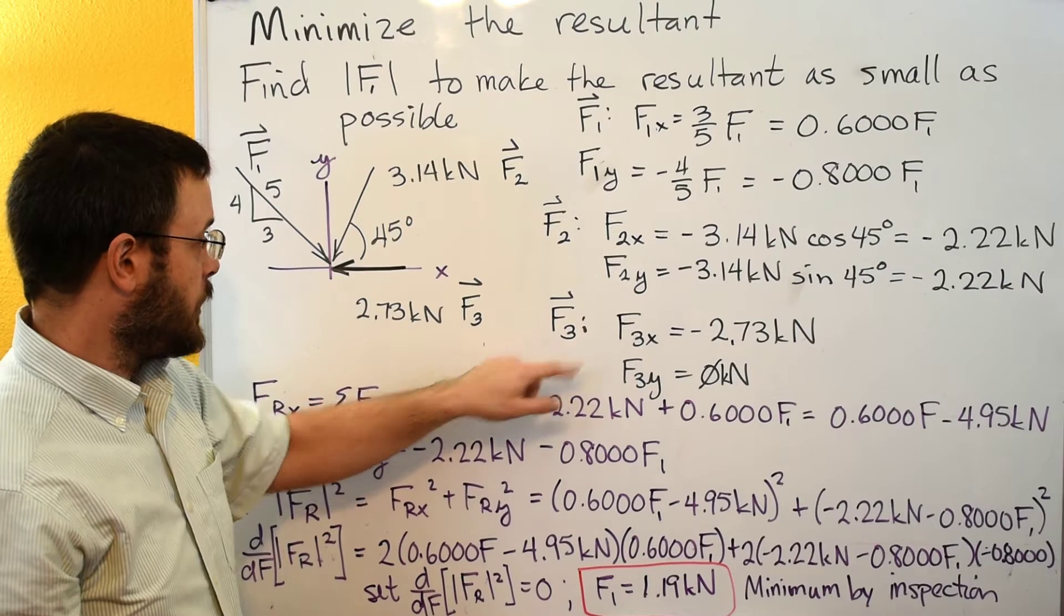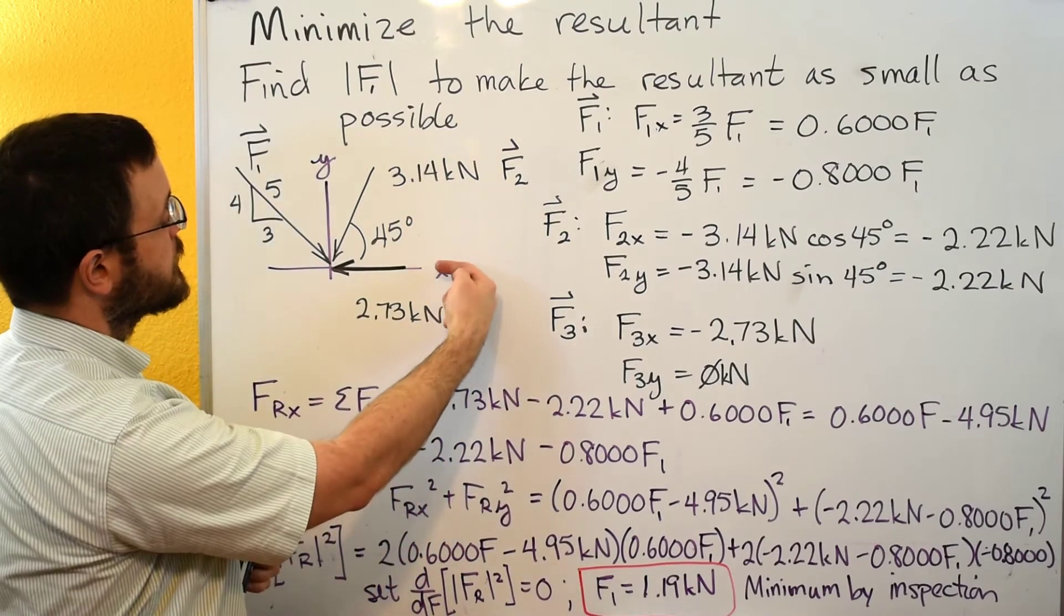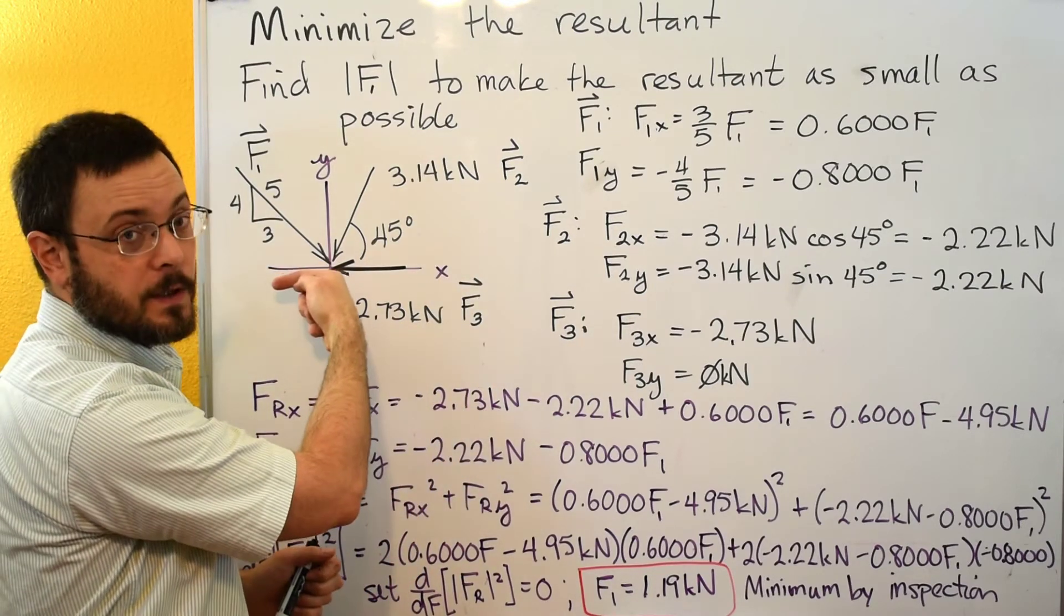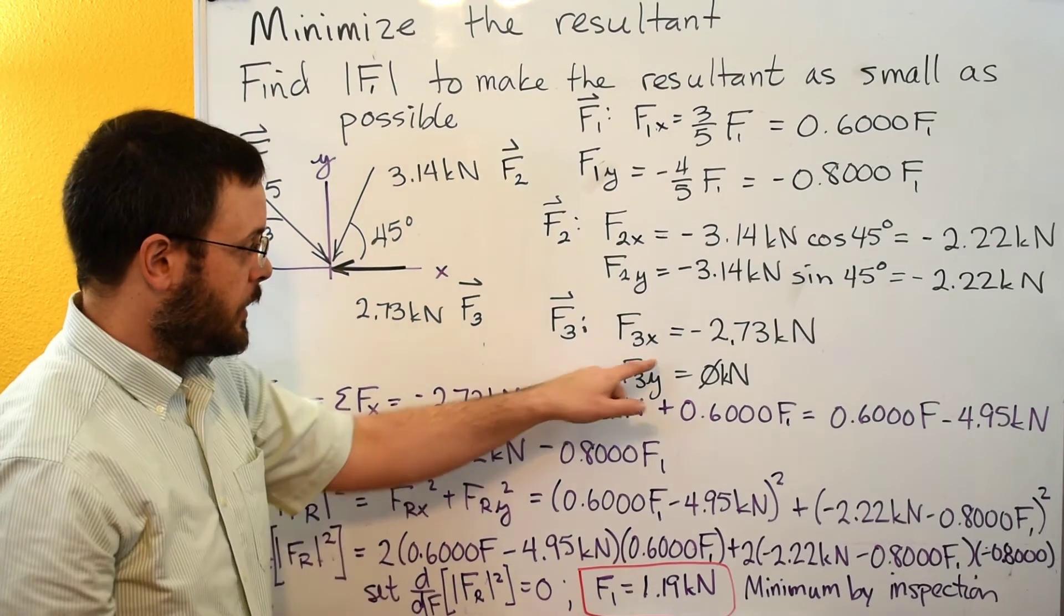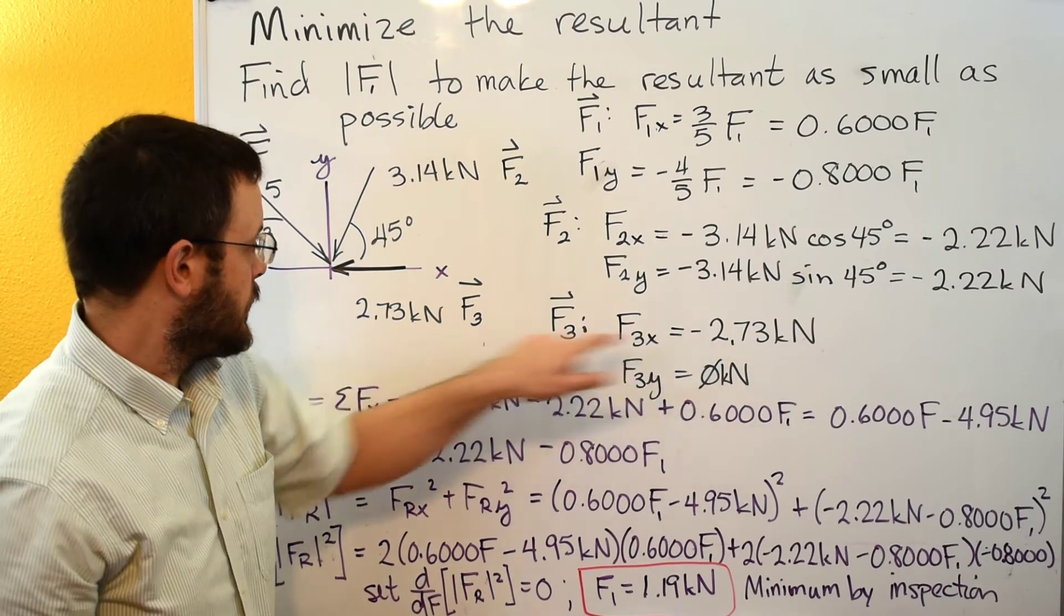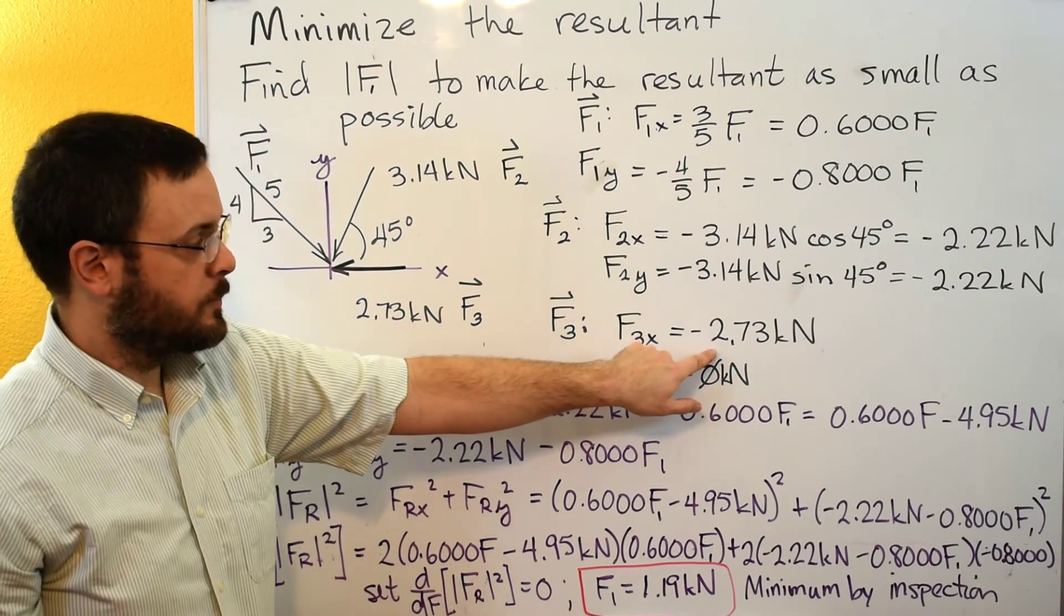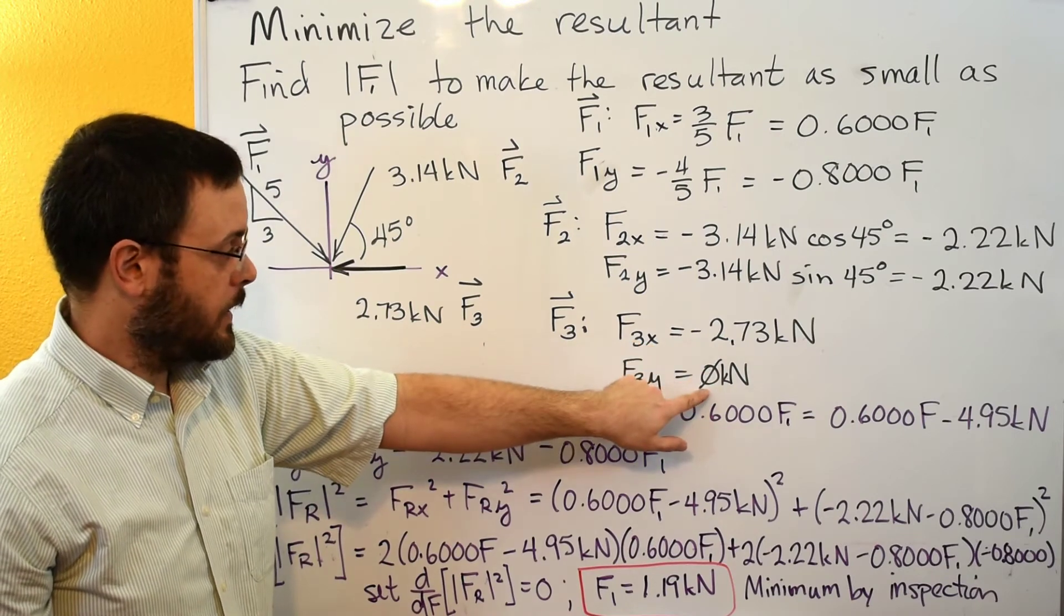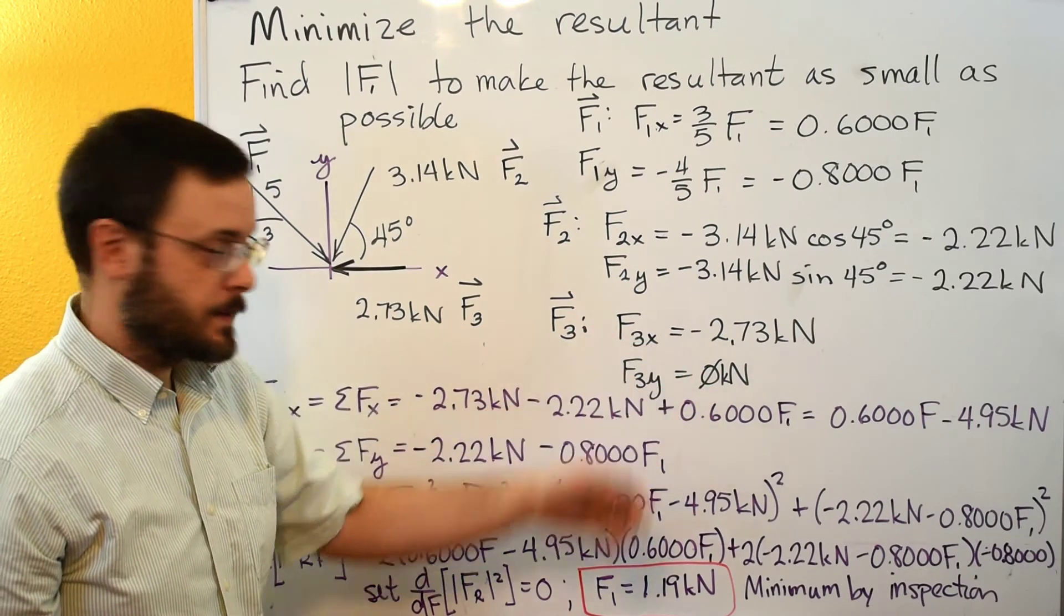And then for F3, F3 contains a vector going in just the negative X direction. So F3X is negative of the full magnitude, 2.73 kilonewtons. And then F3Y is just zero.